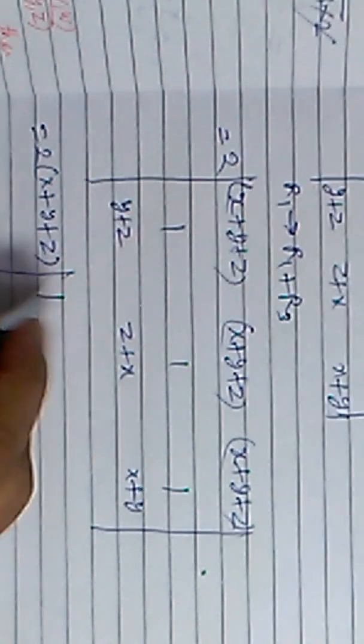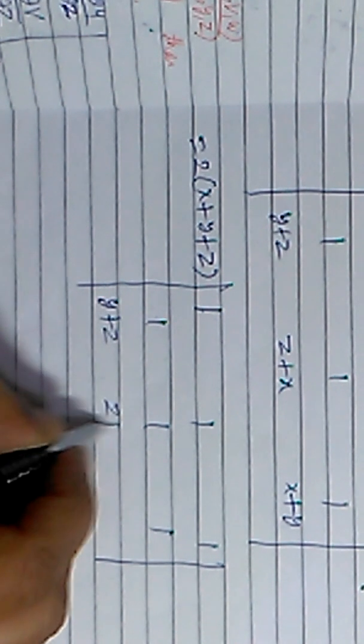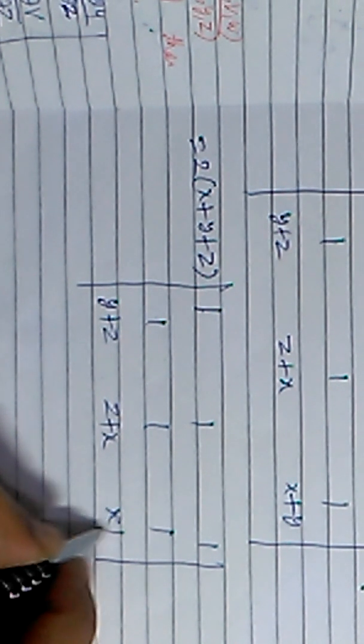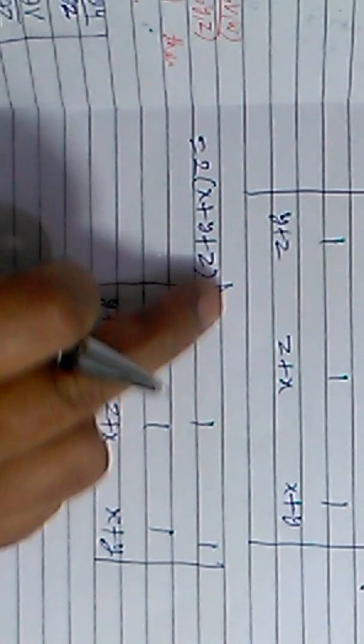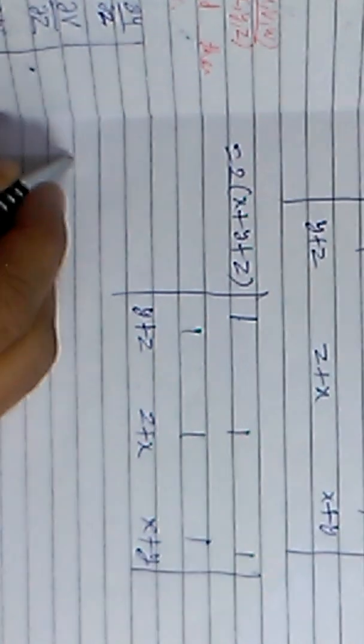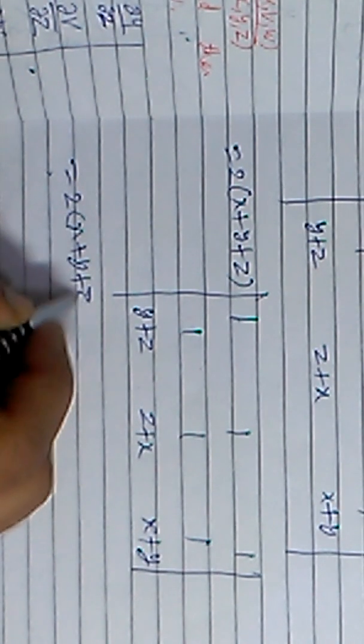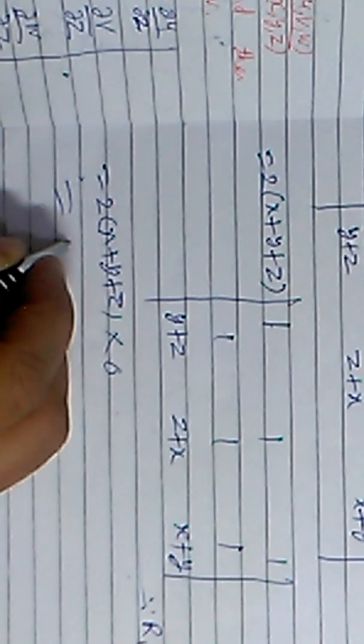Since x+y+z is common in all entries of the first row, we take it outside the determinant. After doing so, the first row becomes 1, 1, 1. But the second row is also 1, 1, 1. Since R1 and R2 are identical, by the property of determinants the value of this determinant is zero.